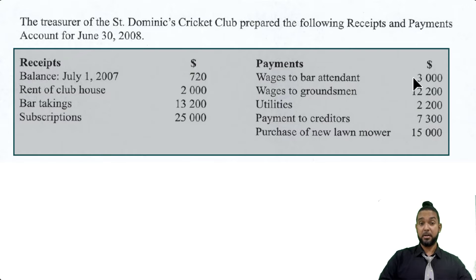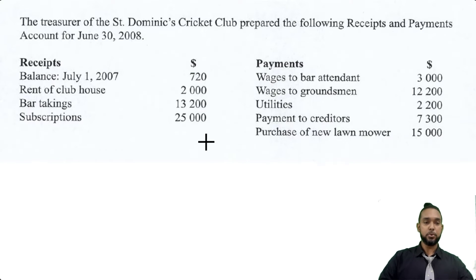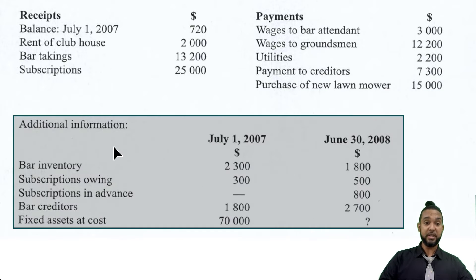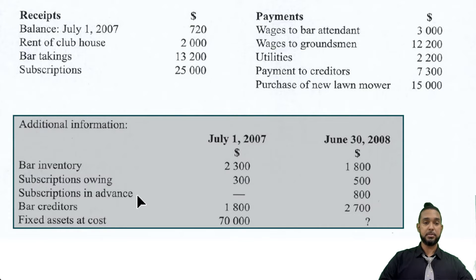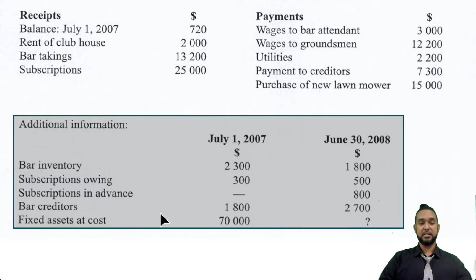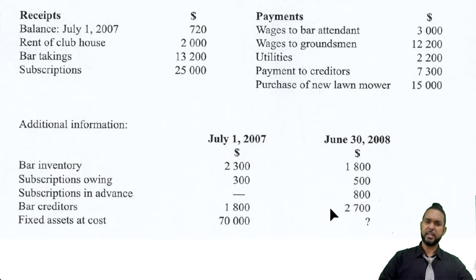On the payment side: we paid the bar attendant, wages to groundsmen, utilities, payments to creditors, and purchase of a new lawnmower. Then we have some additional information with opening and closing balances for July 1st 2007 and June 30th 2008: opening inventory for the bar and closing inventory, subscriptions owing as opening and closing balance, subscriptions in advance with no opening balance but a closing balance, bar creditors opening and closing balance, and fixed assets at cost $70,000 with a question mark for closing.